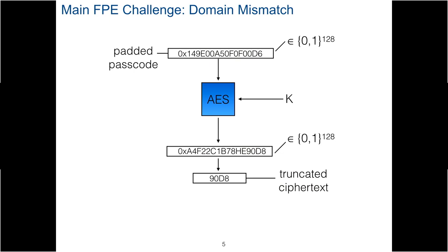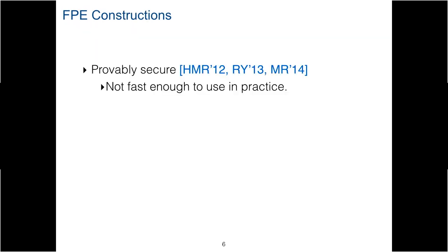Desirably, we like to use already known conventional block ciphers like AES to construct FPE. One way to do it is to pad the input to 128 bits and truncate the output, but this disables the decryption. We still want to use AES because we know its security — it has been there for so long and it's fast enough for practice — but maybe it's not that straightforward to use it.